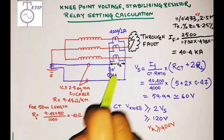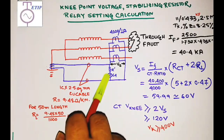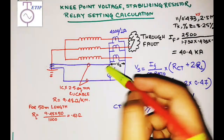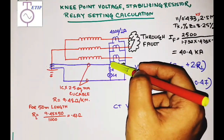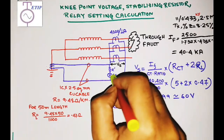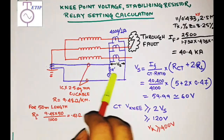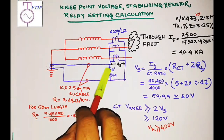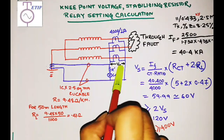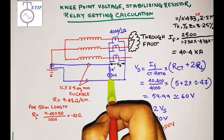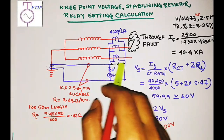Earlier I said that this stabilizing voltage Vs will try to drive a current through the relay coil. I have to make sure that the current flowing through the relay coil due to this voltage is less than the pickup current of the relay. To achieve this, we place another resistance called the stabilizing resistance. This resistance limits the current so the relay does not pick up. Let us see the calculation of this stabilizing resistor.